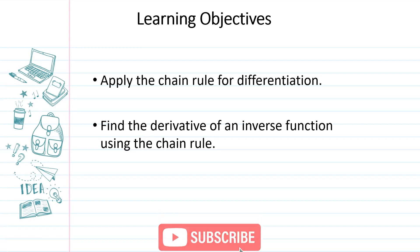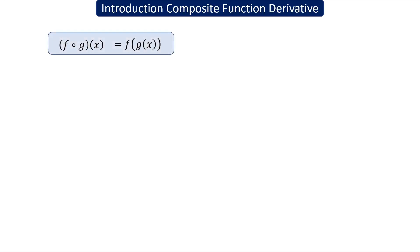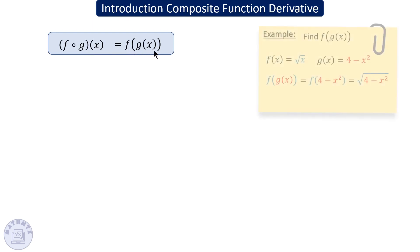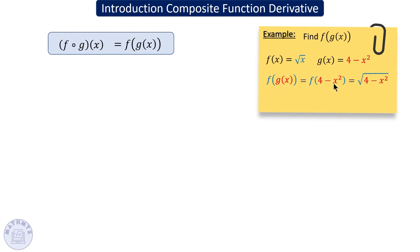If you have a composition function between f and g — f after g of x — this means f of g, meaning you have an outside function of an inside function. In this example, f(x) is the square root of x, g(x) is 4 minus x squared. For f of g, you substitute the function g inside f, giving the square root of (4 minus x squared).